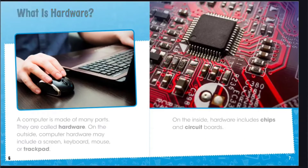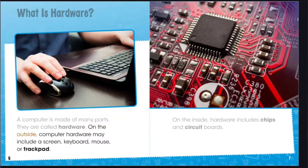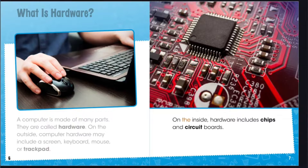What is hardware? A computer is made of many parts. They are called hardware. On the outside, computer hardware may include a screen, keyboard, mouse, or trackpad. On the inside, hardware includes chips and circuit boards.